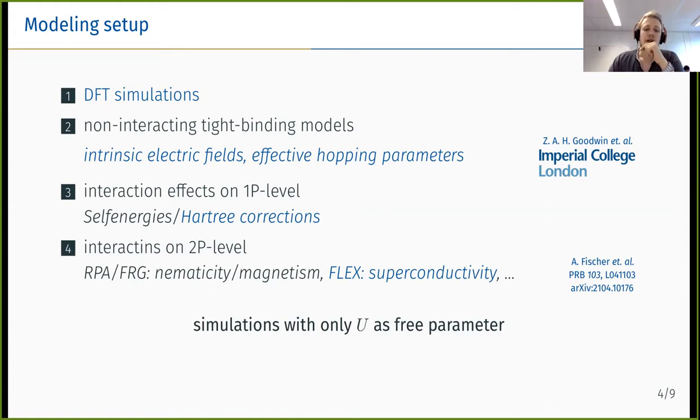In our modeling setup, we have a very close collaboration with the group from Johannes Lüschner at Imperial College. They start with the DFT simulations and also fit the tight binding models to these DFT simulations. Zack has developed the theory to include these Hartree corrections in these tight binding models by very simple forms. We use all of this and start with interactions on two particle level, which we can tackle by different methods such as random phase approximation or even functional renormalization group. We use these as tools to describe nematicity in these large unit cells, or magnetism, or even superconductivity using the fluctuation exchange approximation. Just a short notice: this flex approximation is shown by Amon Fischer in the poster session.